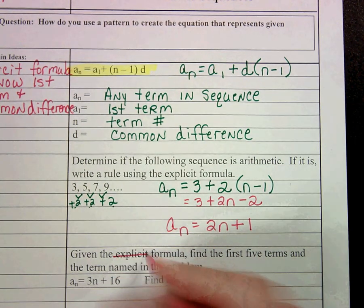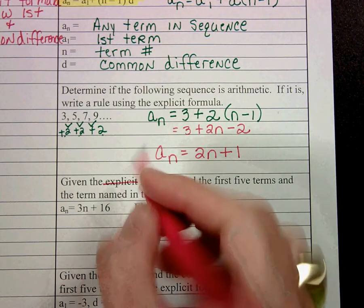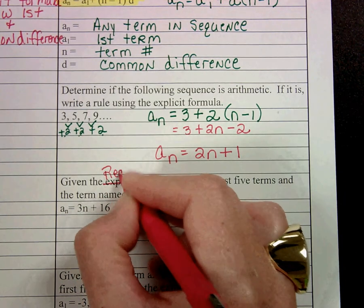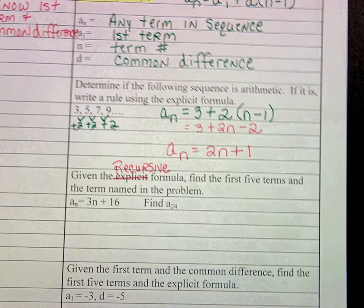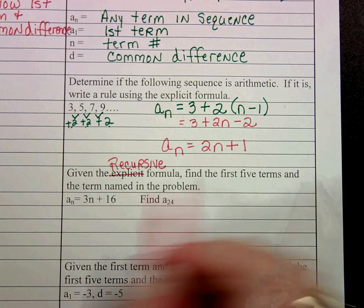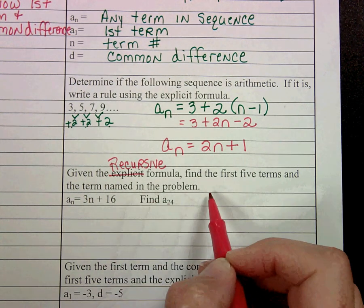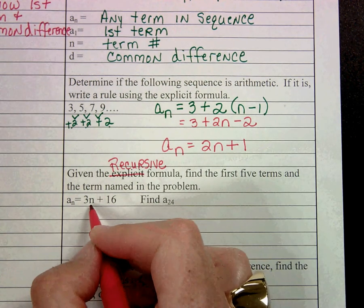Okay, looking at the next one, it says explicit, but that doesn't look like the explicit formula. This looks more like the recursive, so I'm going to change that error on my part. And it says find the first 5 terms and the term named in the problem.